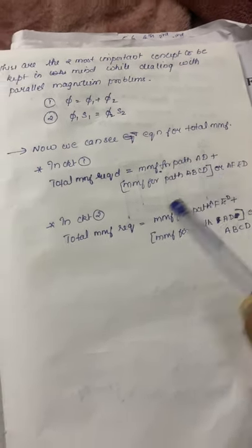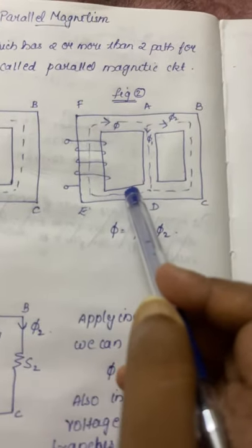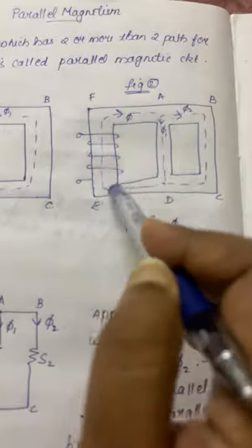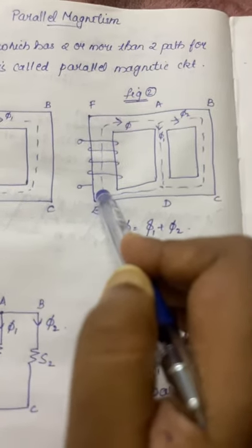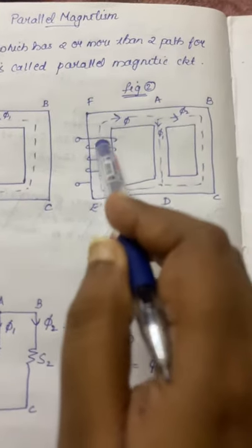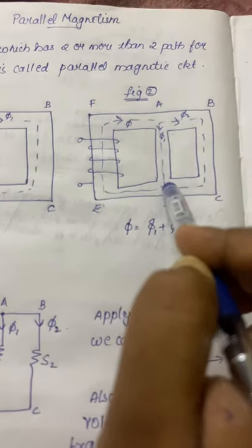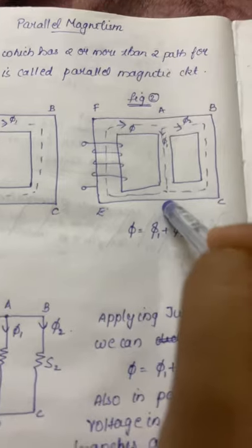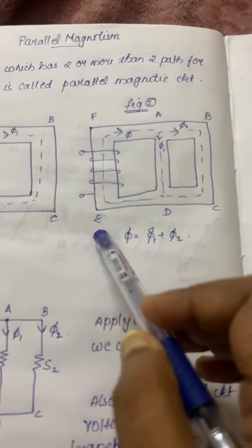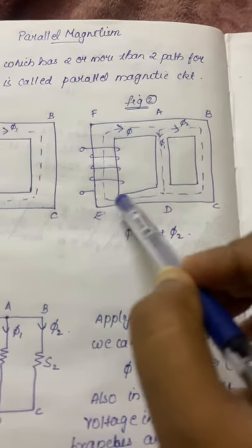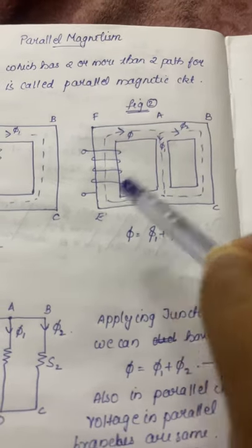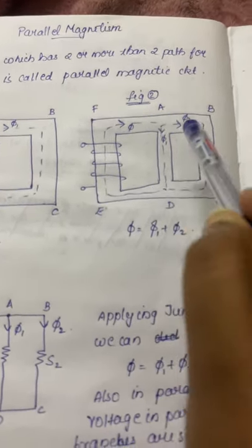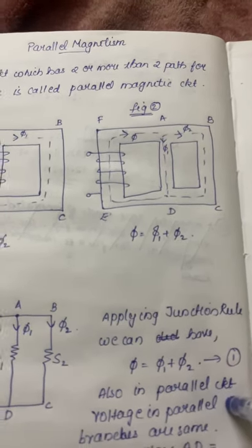For Figure 2, the coil is wound on the left arm. The total MMF required equals MMF of path AFED plus MMF of path AD, or total MMF required equals MMF of path AFED plus MMF of path ABCD. These are the two ways to frame the equation. Remember: whichever path carries the total flux phi must always be included in the MMF equation.